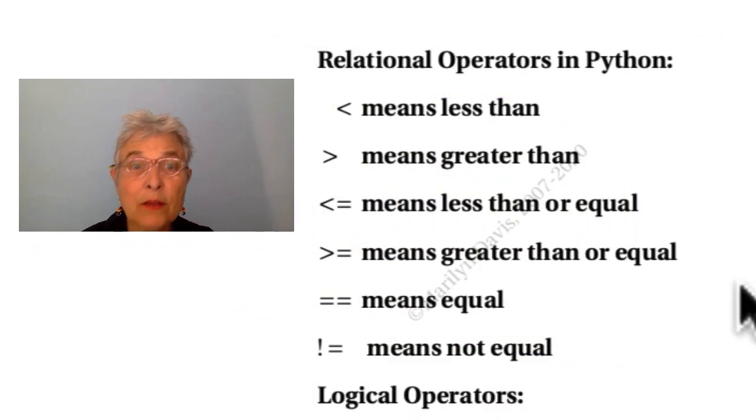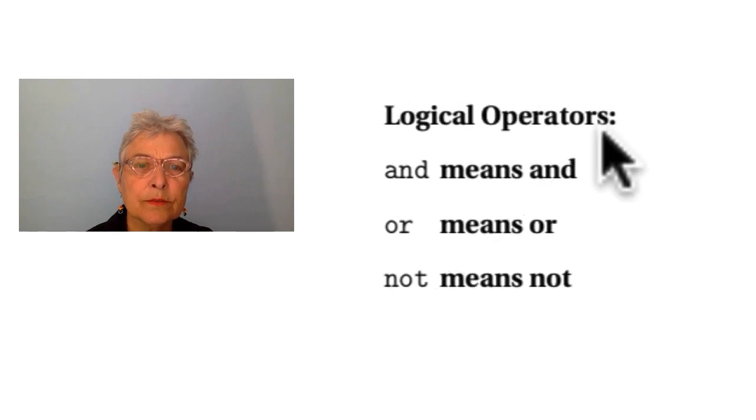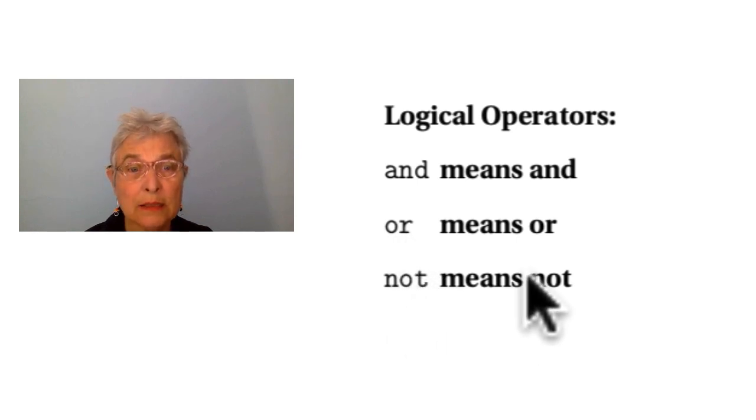Here we see the operators in Python, the relational and the logical. When you have ifs and whiles then you're going to want relational operators. Less than, greater than, less than or equal, greater than or equal, equal. Both sides the same and not equal. Well that's the same as all languages. Now the logical operators, they're a little different because if you want to say and you say and. That's not like other languages. So these English words appear in your code meaning exactly what they should. I should mention that relational operators are called relational operators because they talk about the relationship between the two sides or the two operands. That's why they're relational and these are logical operators because they result in the booleans, true or false.